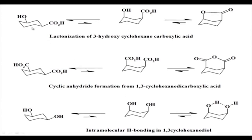Another example: cyclohexane carboxylic acid with a 3-hydroxy group exists in the diequatorial form. If you want to do lactonization — intramolecular esterification — between the OH and the CO2H, this molecule has no other choice but to flip into the axial conformation to form the lactone. Similarly, if you want to make an anhydride out of a cis-1,3-cyclohexanedicarboxylic acid, the only option is to flip into the diaxial position so that the two carboxylic groups can form the anhydride.